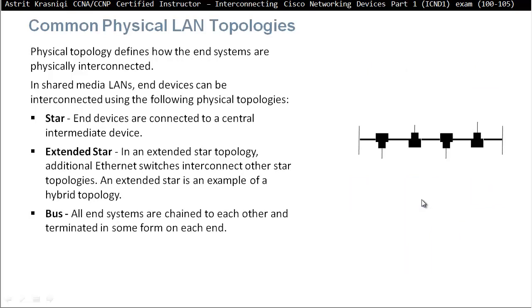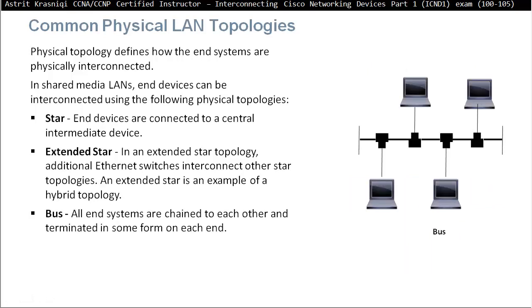The next type of topology that we used to have in LAN — not anymore that much — is the bus topology. In the bus topology, all end devices are chained to each other and terminated in some form on each end. We have a copper cable running around the network and connect end devices to it. With the bus topology, the problem was they ran a protocol called Carrier Sense Multiple Access Collision Detection.